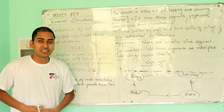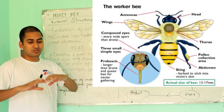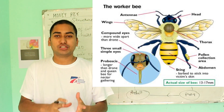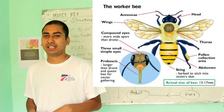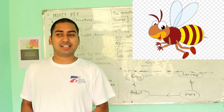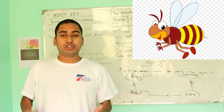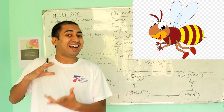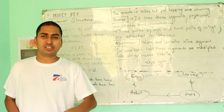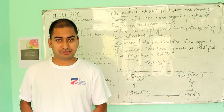Now we have the external structure. First, the outer body has a cuticle layer. It acts as an exoskeleton. Insects have an exoskeleton — cuticle is a hard layer. The body is divided into head, thorax, and abdomen.